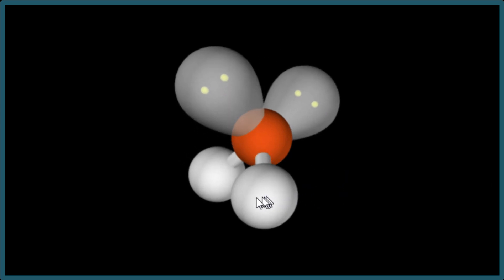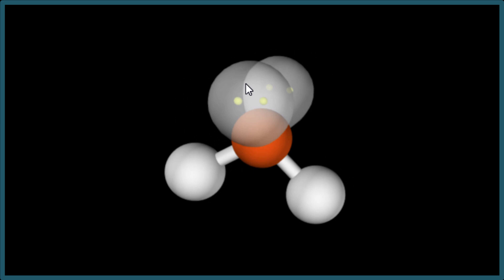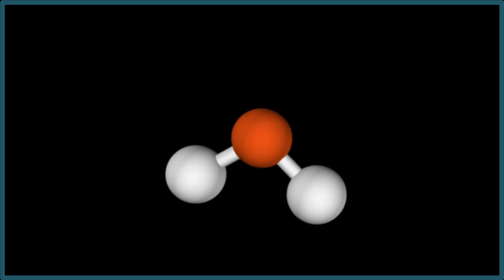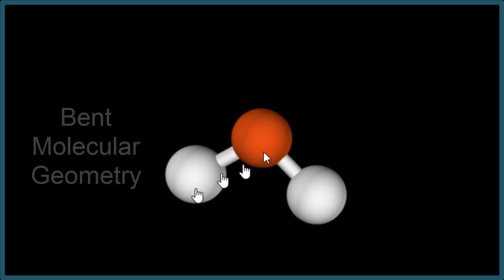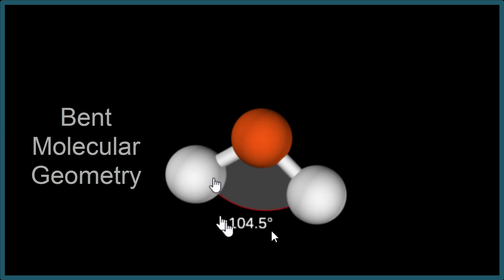So here's our water molecule and if you thought about the molecular geometry, you kind of ignored the lone pairs, you can see that it's a bent molecular geometry. This is about 104.5 degrees with the bond angles here.